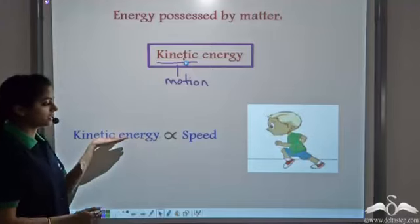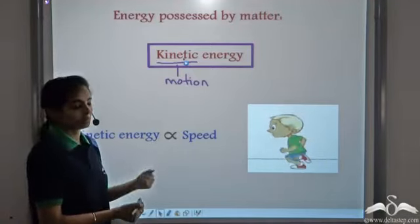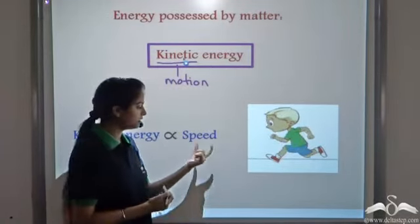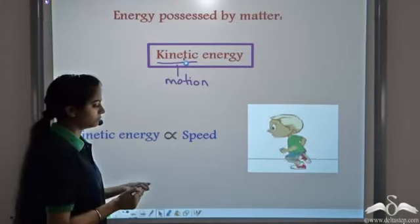Greater is the speed, greater is the kinetic energy, and vice versa. Greater the kinetic energy, greater the speed. So in the first case, when the ball was coming at a lesser speed, the ball had lesser kinetic energy. Hence you got a bump.